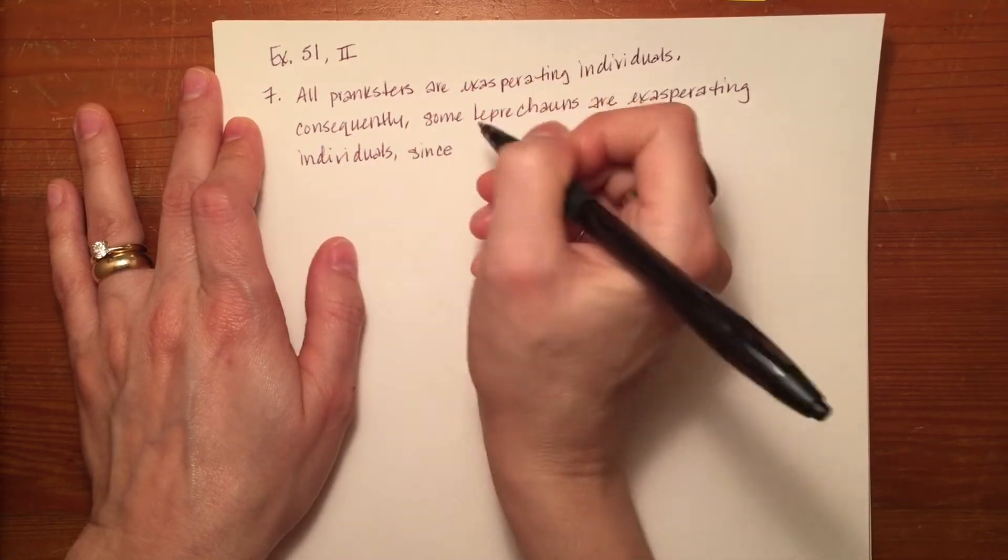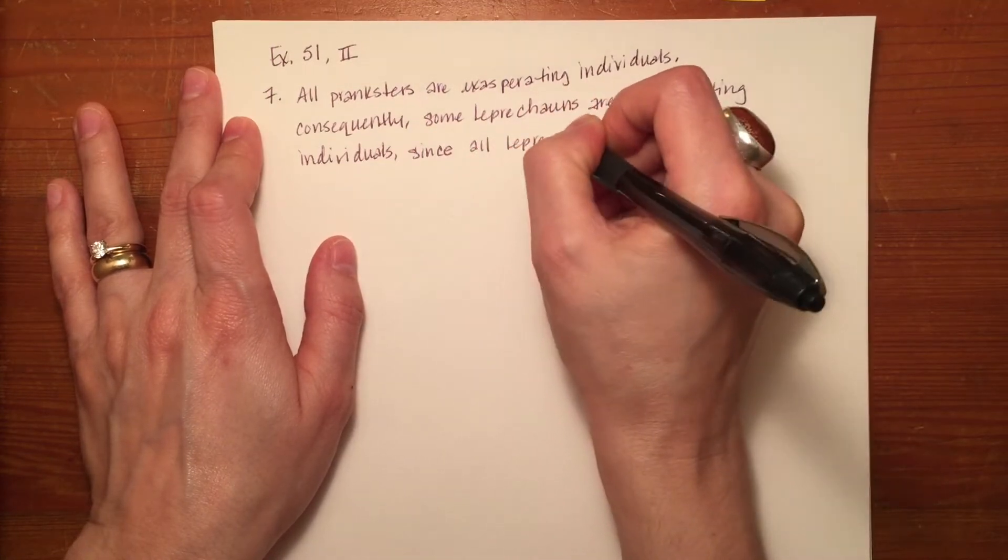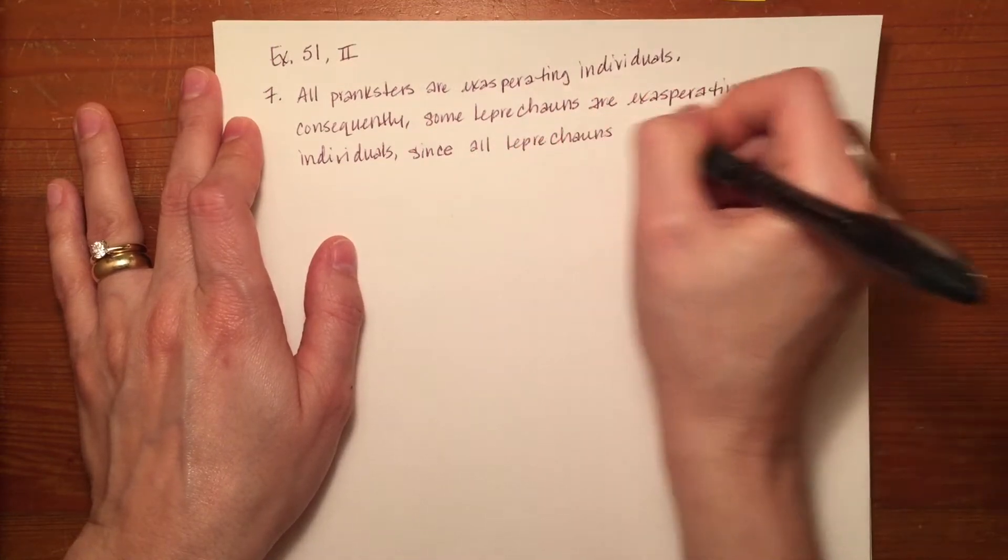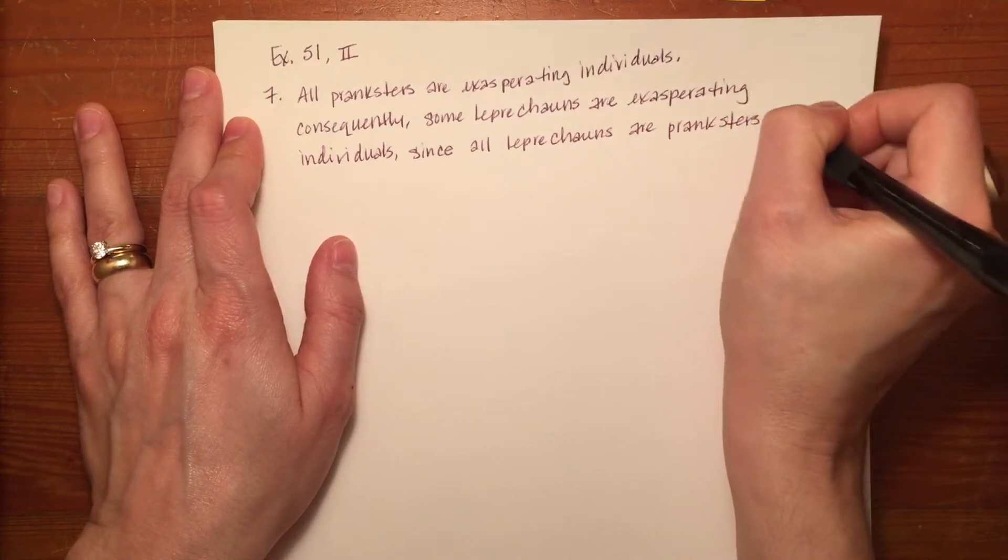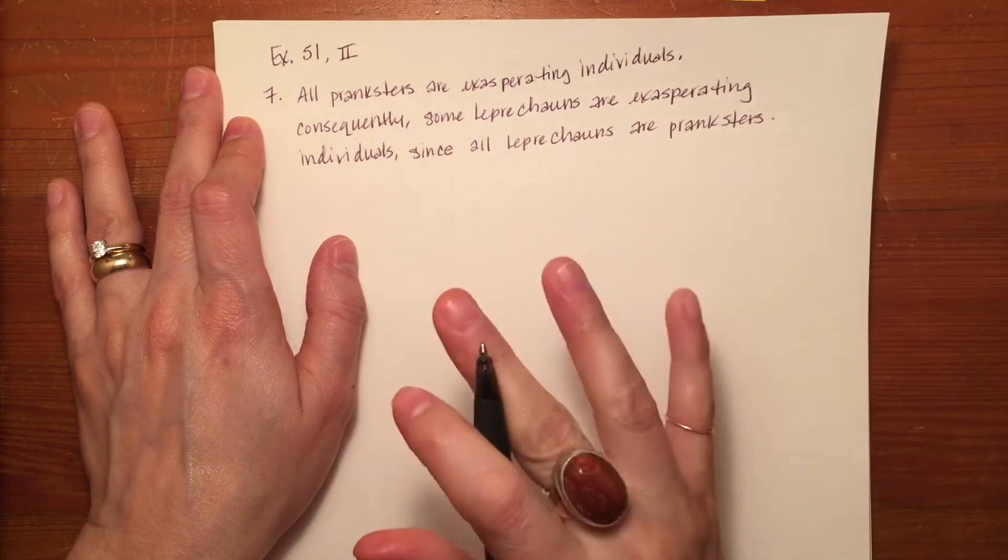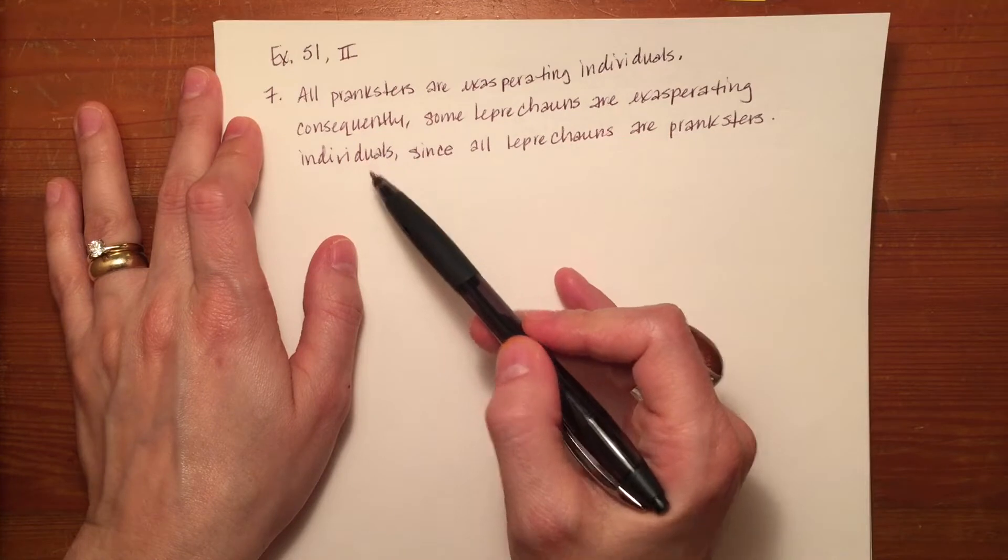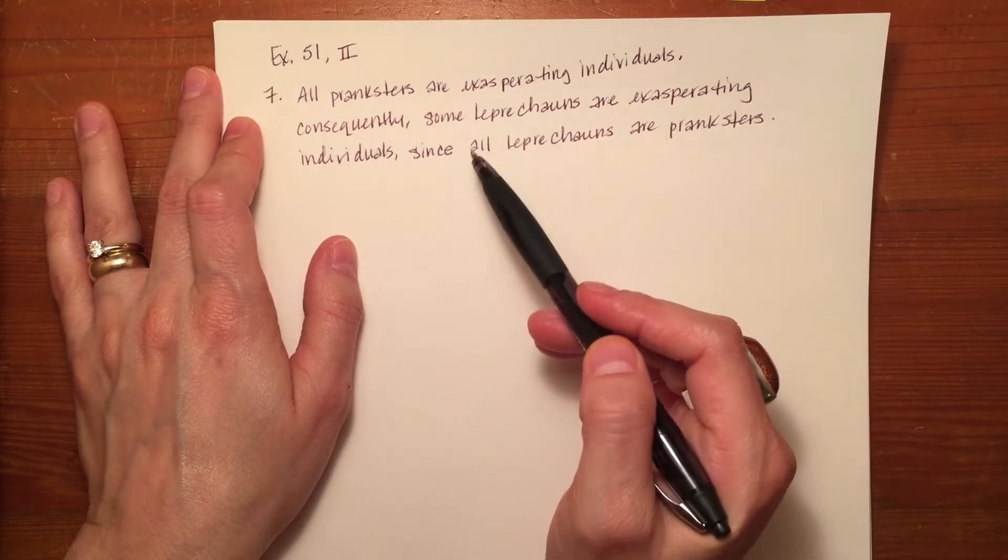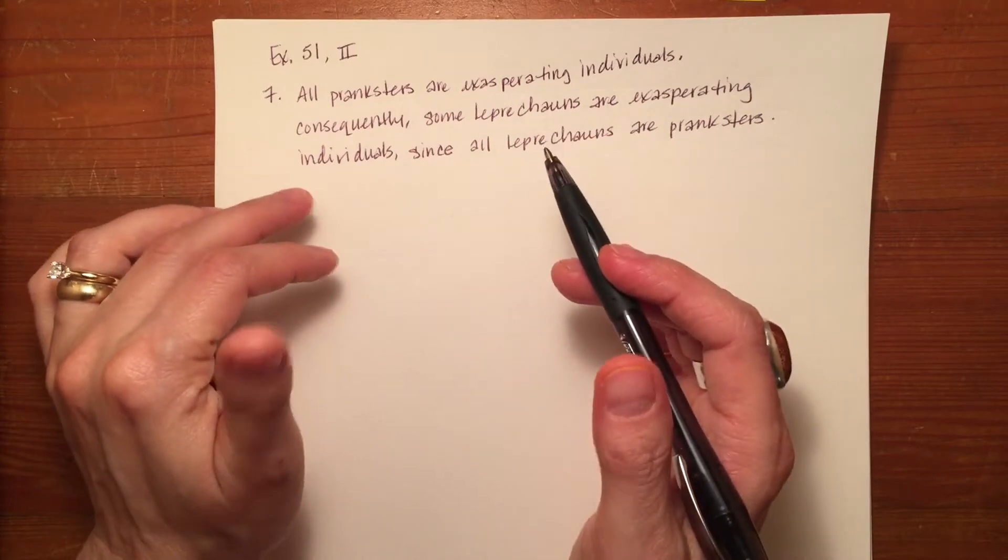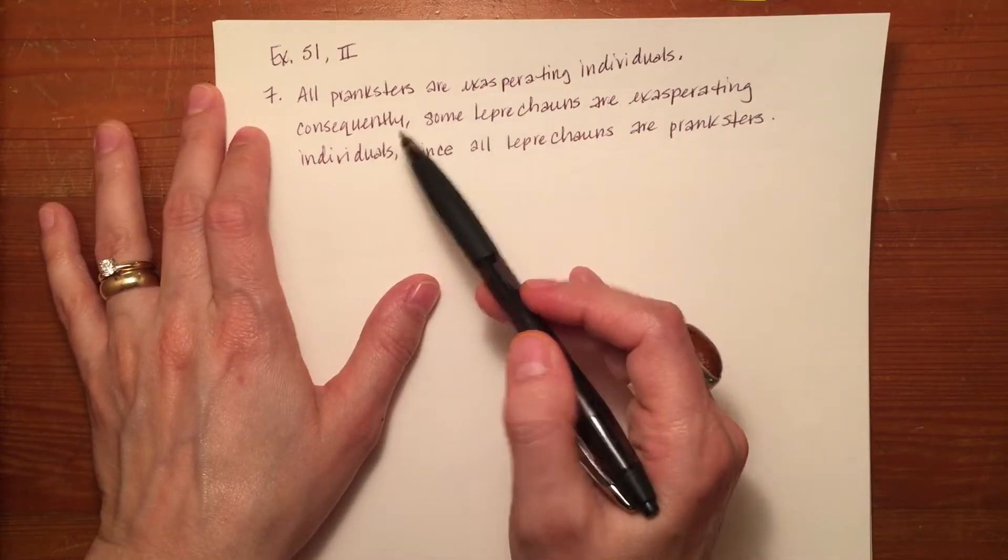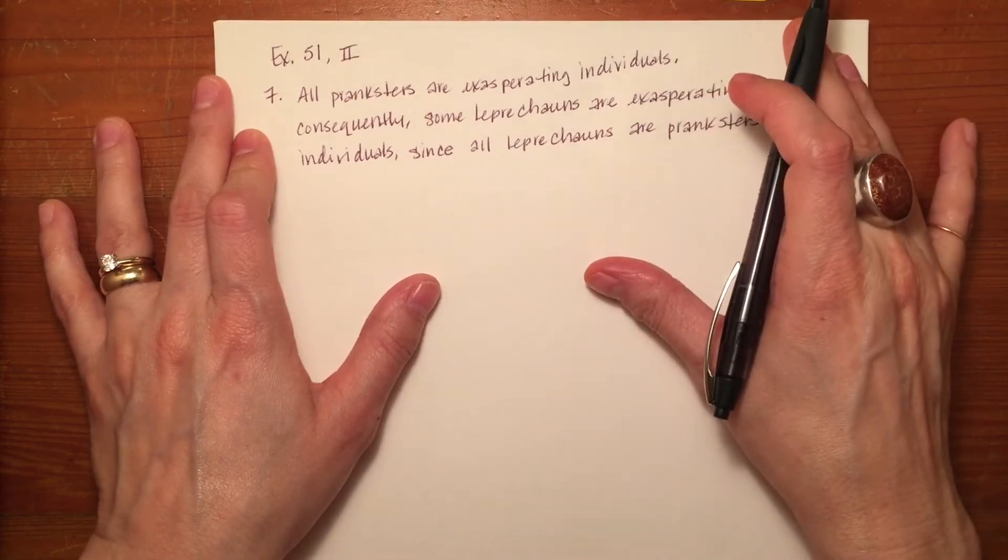Since all leprechauns are pranksters. So you'll notice a couple of things about this example. One, the conclusion is not in an easily recognizable place. You may be looking for the conclusion at the beginning of an argument or at the end of an argument. Here it's in the middle. You will encounter this pretty often with categorical syllogisms.